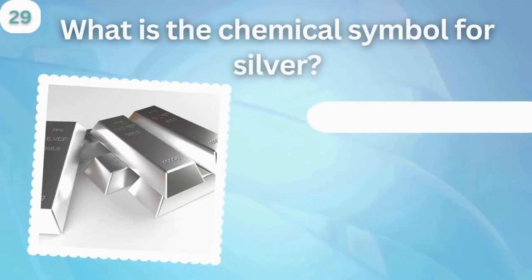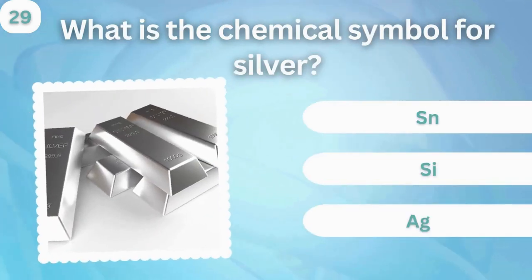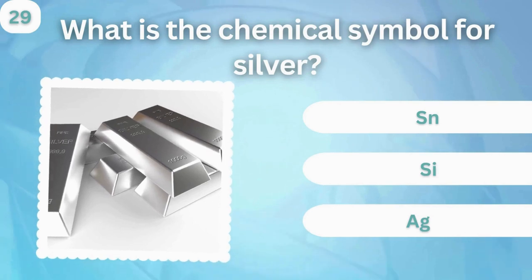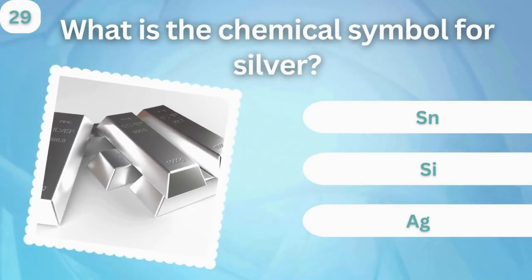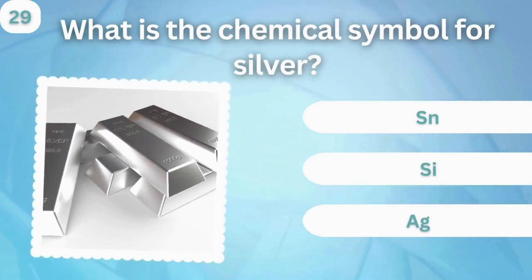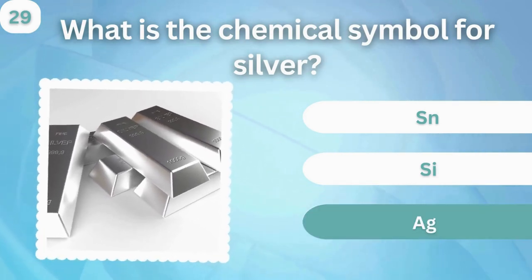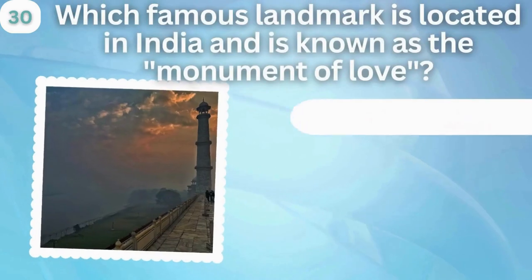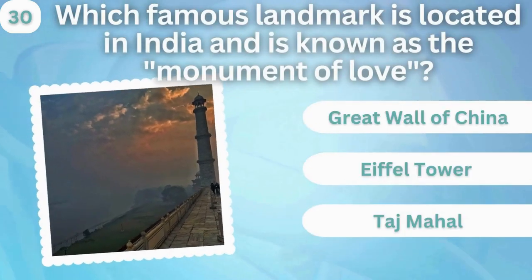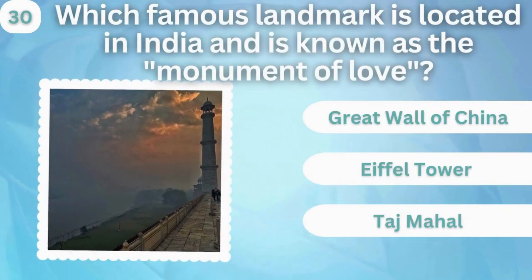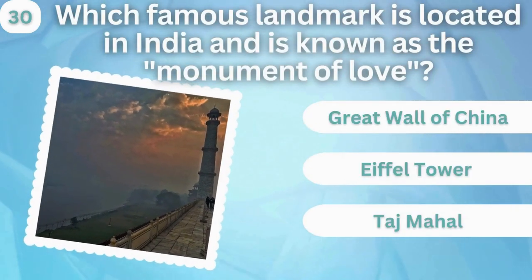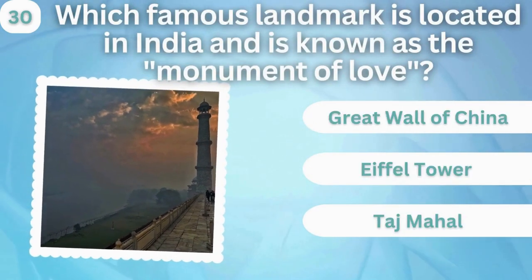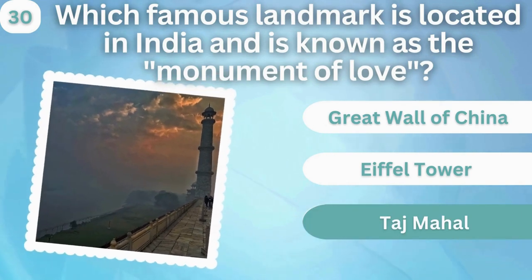What is the chemical symbol for silver? Sn, Ca, or Ag? Ag. Which famous landmark is located in India and is known as a monument of love? Taj Mahal.